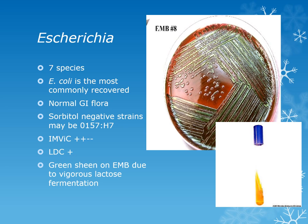Escherichia are lysine decarboxylase positive, and you can see what looks like a green metallic sheen on EMB due to the vigorous lactose fermentation. EMB only has lactose in it, and if you have a vigorous lactose fermenter it will be metallic green. This most commonly happens with E. coli.